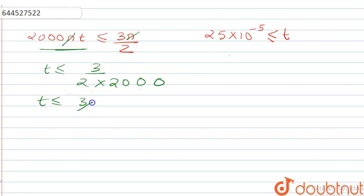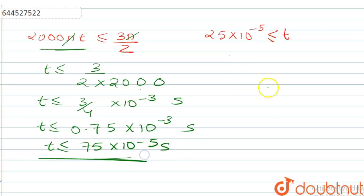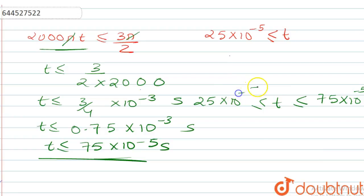This gives t ≤ 3/4 × 10⁻³ seconds, which we can write as 0.75 × 10⁻³ = 75 × 10⁻⁵ seconds. Therefore, the time range should lie between 25 × 10⁻⁵ seconds and 75 × 10⁻⁵ seconds for the magnetic force to be in the positive y direction.